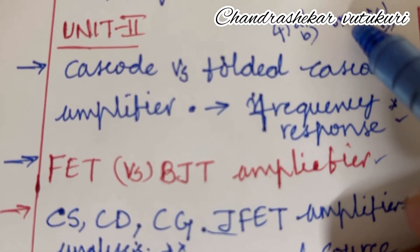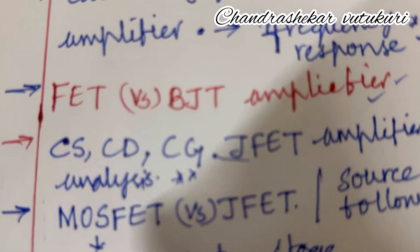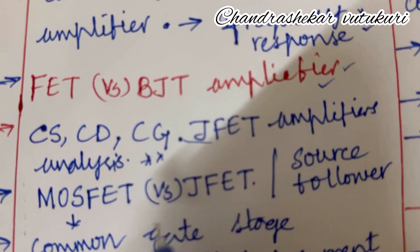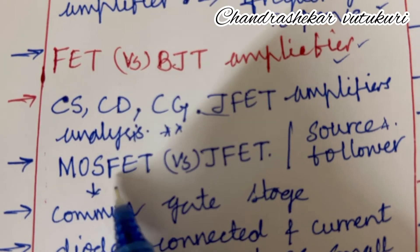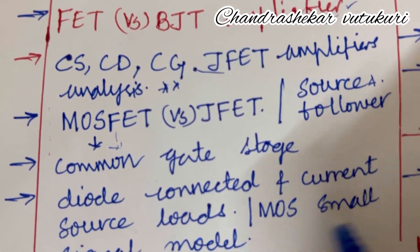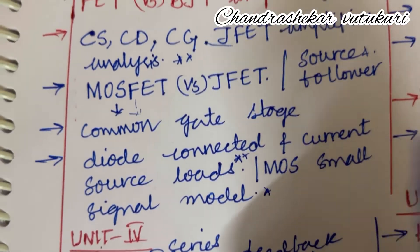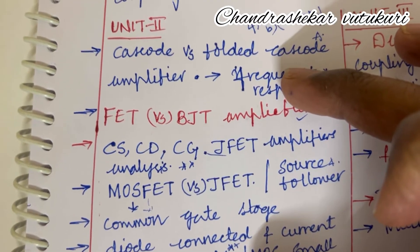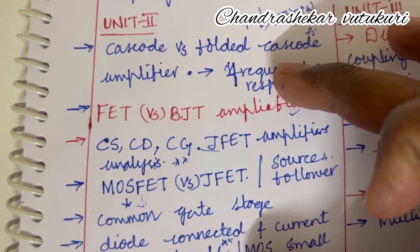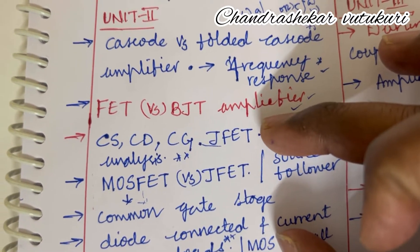Question numbers 4AB or 5AB are for Unit 2. MOSFET as well as JFET — their differences — and the source follower is set as the topmost question. Common gate stage for MOSFET is set as the topmost question. Diode connected and current source loads is set as 5AB, and more small signal analysis may be 5B. From this part you are going to get 4AB as well as 5AB. Make sure to work out each and every parameter I am highlighting and do not skip any part, as skipping may lead to failure and loss of marks.